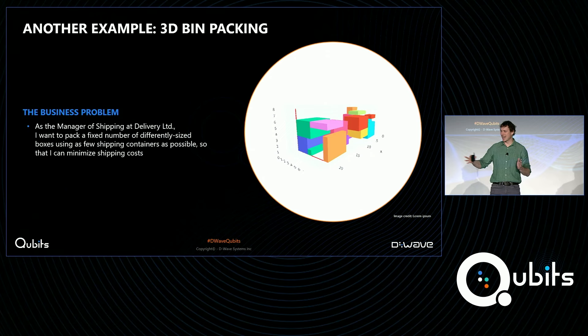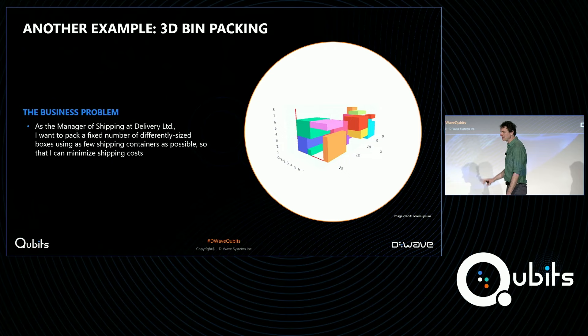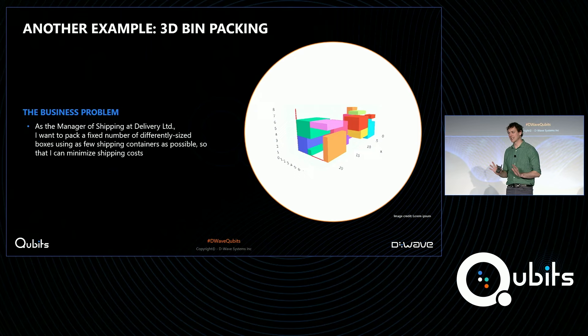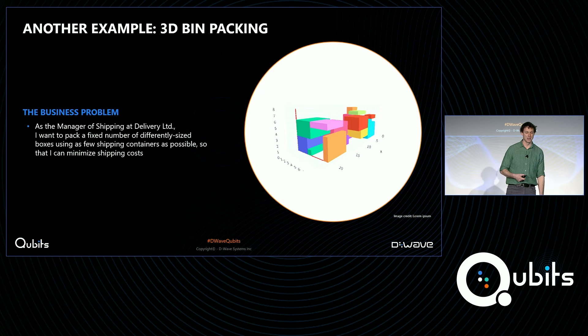I want to go through this one more time with a different application to bring this home. As a manager of shipping at a delivery company, I want to pack a fixed number of differently sized boxes using as few shipping containers as possible, so that I can minimize shipping costs. This is a classic problem in optimization and logistics — also known as 3D bin packing — and Johnson & Johnson yesterday mentioned this as one of their applications. There are many variations: some include routing, some have different sizes.